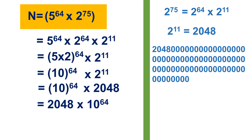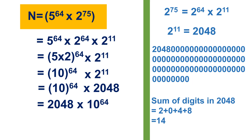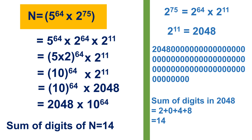It means there are 64 zeros appended to 2048. No matter how many zeros, the sum of those zeros is always going to be zero. Therefore, the sum of digits of n equals the sum of digits in 2048, which is 2 + 0 + 4 + 8 = 14. Therefore, the sum of digits of n equals 14, which is the answer.